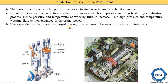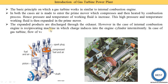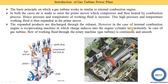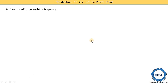The expanded products are discharged through the exhaust. In an internal combustion engine, it is a reciprocating machine in which the charge is induced into the engine cylinder intermittently. In a gas turbine, the flow of working fluid through the rotary machine is continuous and smooth. In an IC engine, the supply is intermittent and average torque varies, but in a gas turbine it is a rotary machine and power supply is continuous and smooth.